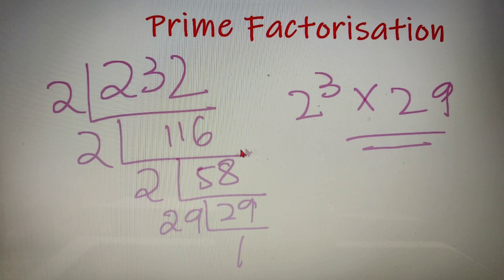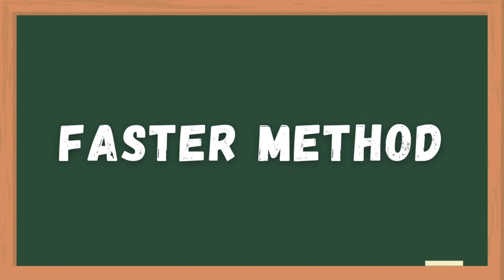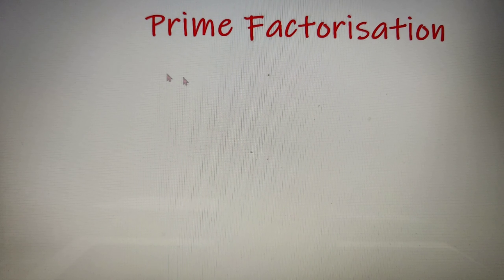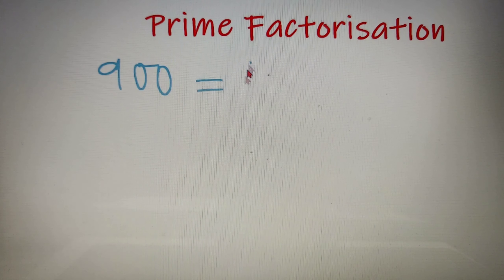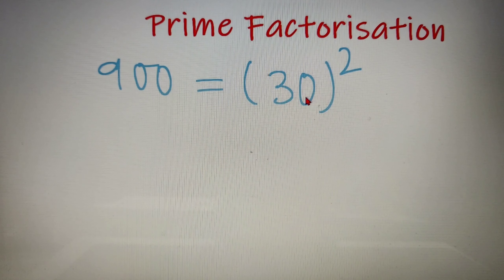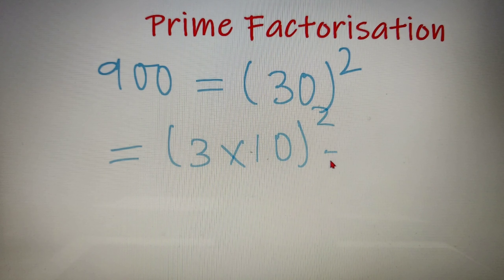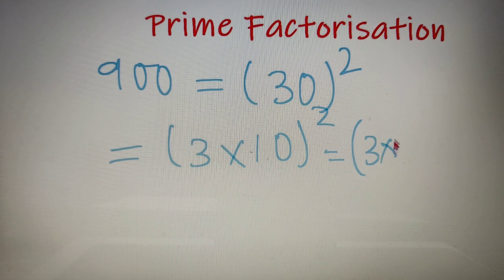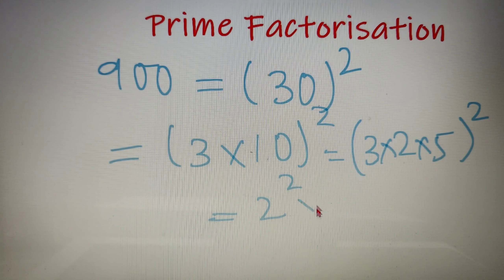In some cases we can apply a much faster method — let's learn that too. Suppose we have to prime factorize 900. I know that 900 is equal to 30 squared, so I write it as 30 squared. Now 30 is equal to 3 into 10, so I write it as 3 into 10, whole squared. And since 10 is equal to 2 into 5, the answer is 3 into 2 into 5, whole squared — so the prime factorization is 2 squared into 3 squared into 5 squared.